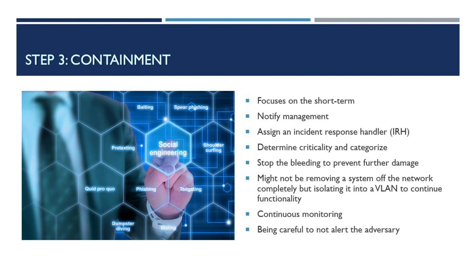Another thing to keep in mind is that isolation versus completely taking something offline means adversaries might become aware that you know they're in the network, and it might be better to monitor them. When you isolate a system in a VLAN, the endpoint is still in the network, so it will still appear to be connecting to the C2, ultimately making the attackers believe everything is fine. This may not be an option if they've made it into an area with sensitive data, or if the attack surface could make eradication worse.